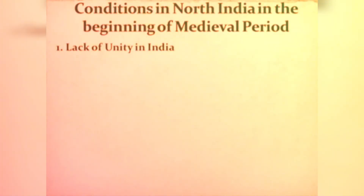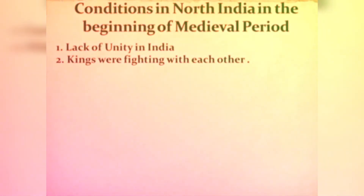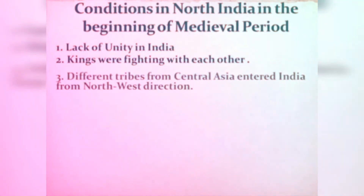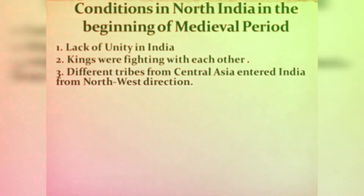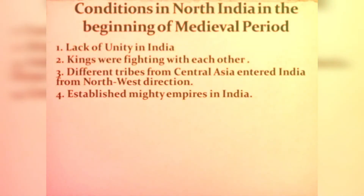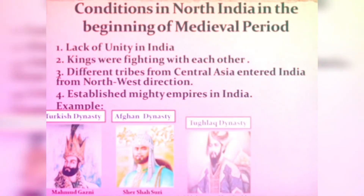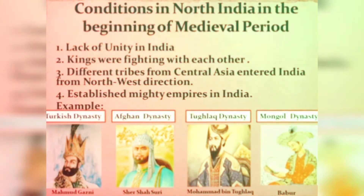These kingdoms were fighting to become more powerful and to establish their supremacy over other kings. In this way, the political conditions in India became very unstable. The main reasons were: first, lack of unity in India; second, kings fighting with each other to increase their areas of kingdom; third, different tribes from Central Asia entered India from the northwest; and fourth, they established mighty empires in India — for example, the Turkish dynasty, Afghan dynasty, Tughlaq dynasty, and Mongol dynasty — all of which ruled from the 11th century to the 18th century.